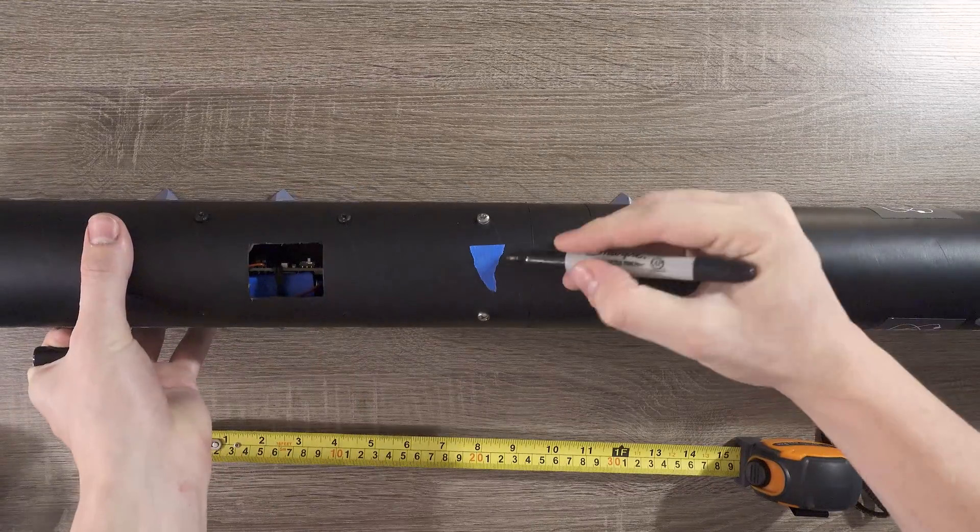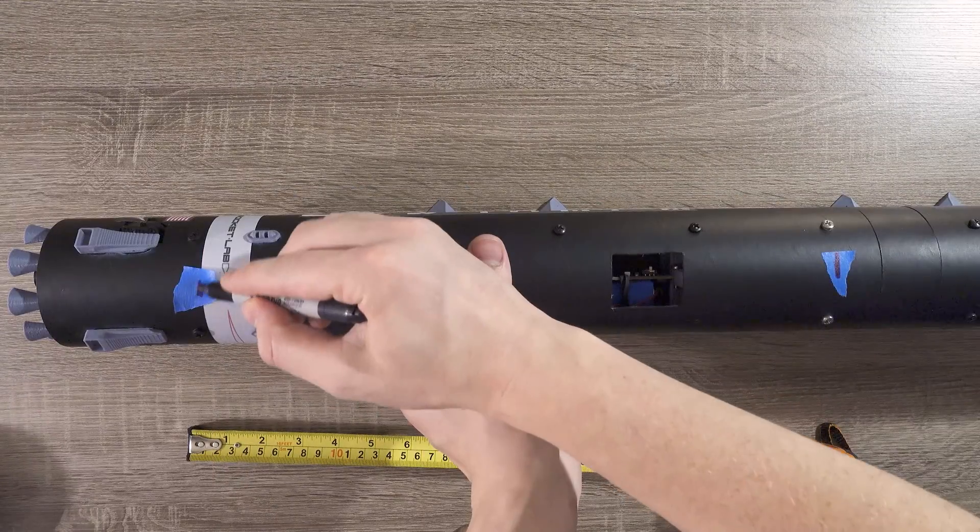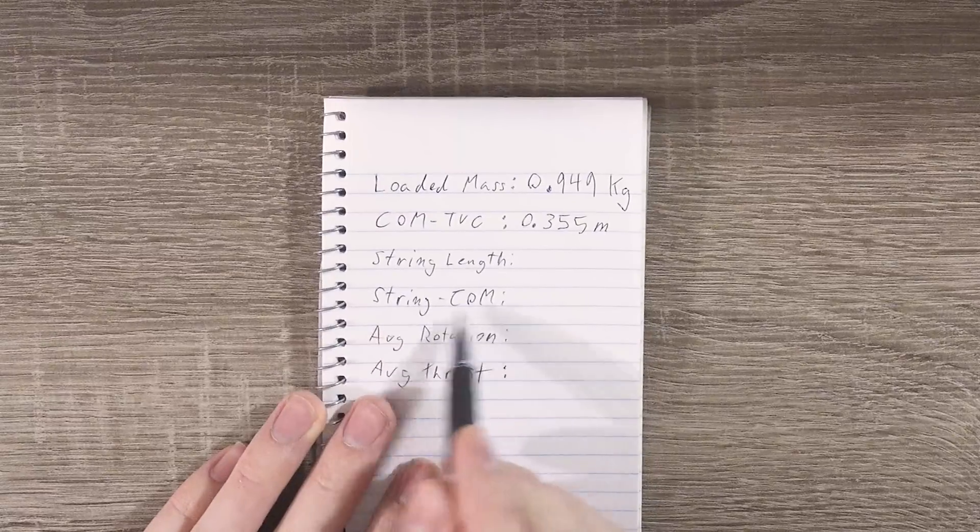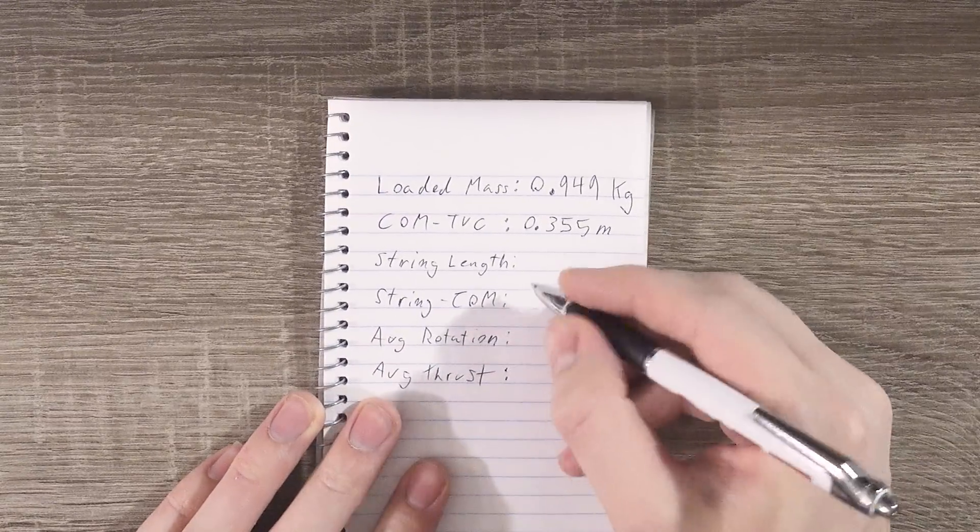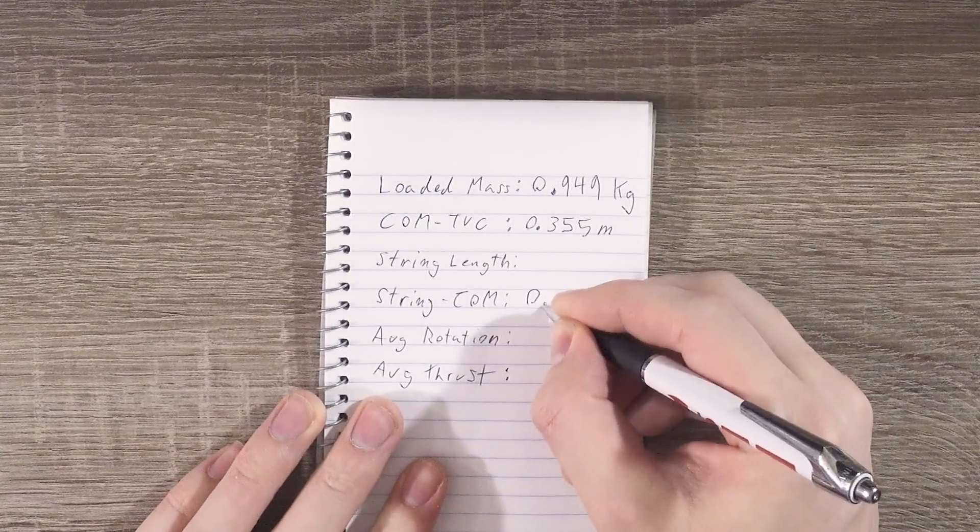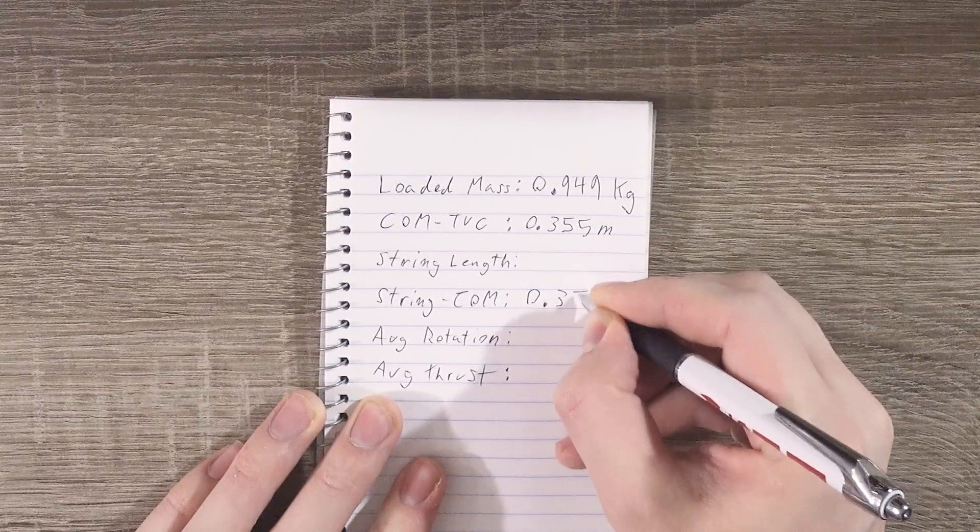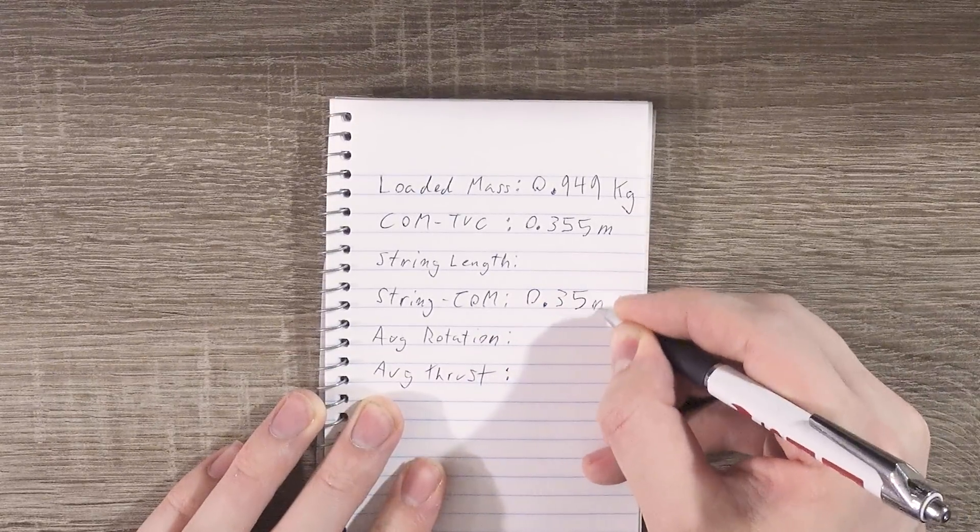Once these measurements are marked, we'll get a little bit more specific by marking their exact spot with a sharpie. Then I'll write down the distance I chose in the string to COM section. Once again, this should be in meters, so instead of 35 centimeters, I'll write 0.35 meters.